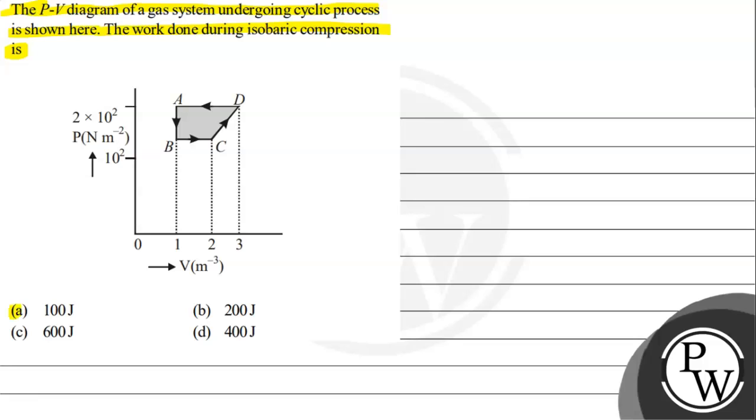So here we have shown the PV graph. Option A 100 J, Option B 200 J, Option C 600 J, Option D 400 J.